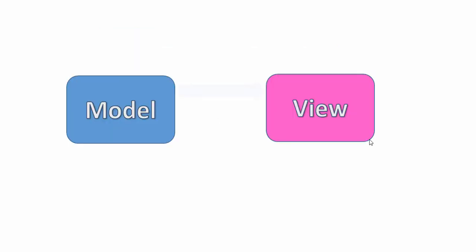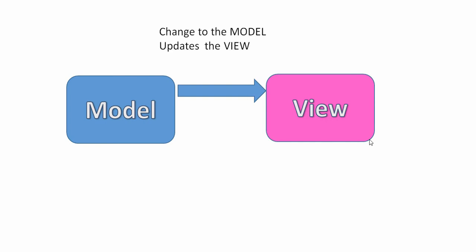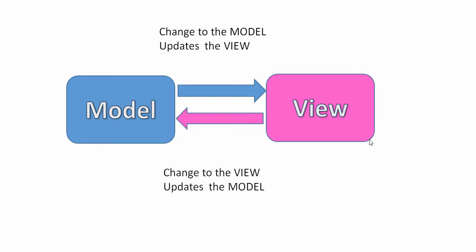So how does it work? We have model and view as a MVC architecture. When I change the data in the model, it will automatically be updated in the view. When I change the view, it will be updated in the model.